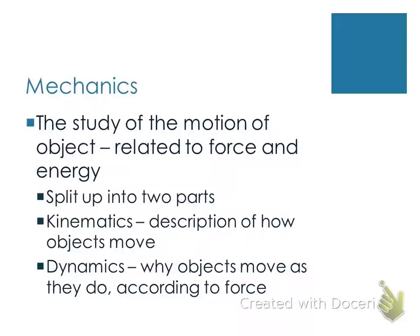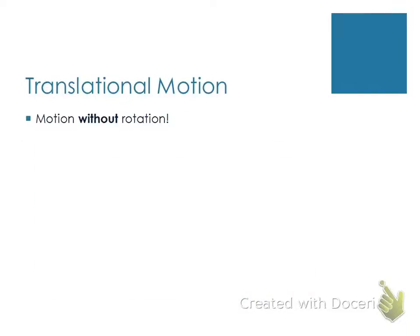The second section is the dynamics section, which talks about why things move the way they do, and it deals specifically with forces. We are talking first in Chapter 2 about what we call translational motion. Translational motion is motion that does not mean something is rotating. Moving in a circular pattern is different than something that's rotating.